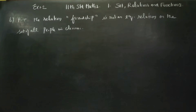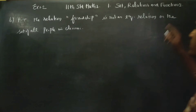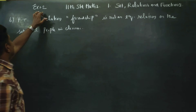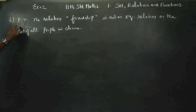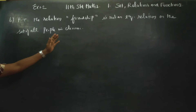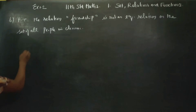Hello 11th standard students. I am Karanagaran. In chapter number 1, exercise number 1.2, we have to prove that the relation 'friendship' is not an equivalence relation on the set of all the people in Chennai.